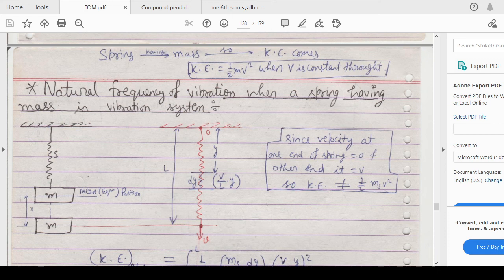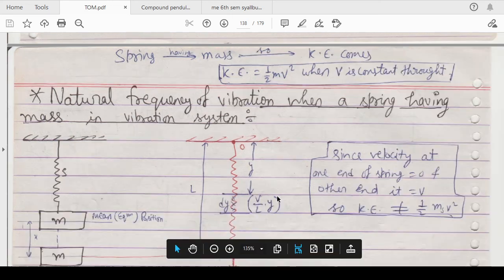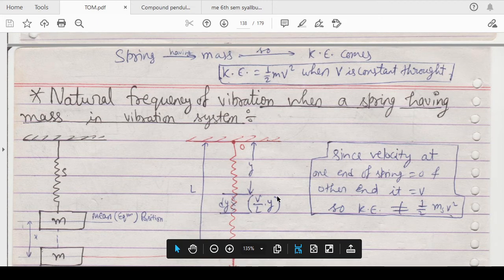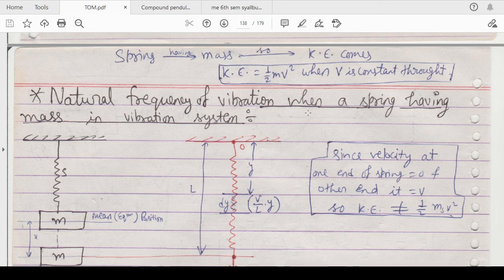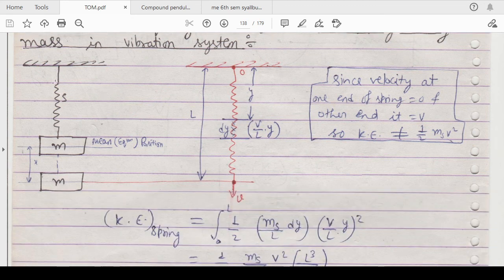Let's see what changes will occur if any system is having mass of the spring. Suppose this is the spring S with stiffness, and the mass of this is ms. If you take a section of this with dy length at distance y, this will be ms/l into y. In this way you can calculate the whole mass of this particular cross section.